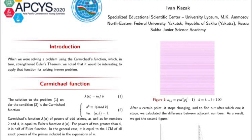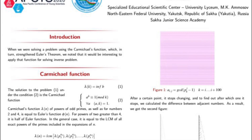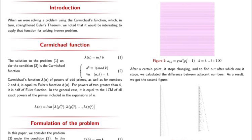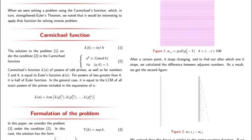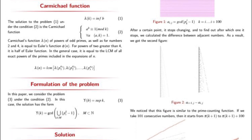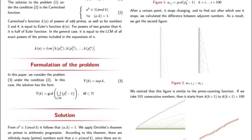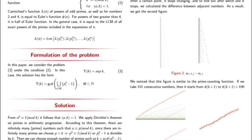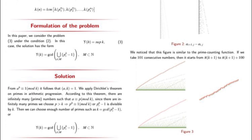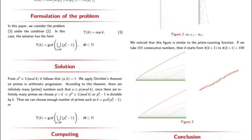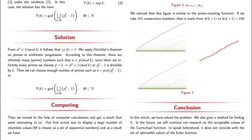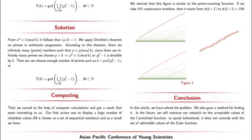In this study, we have solved the problem and also describe a method for finding it. In future, we will continue our research on the acceptable values of the Carmichael Function. To speak beforehand, it does not coincide with the set of admissible values of Euler's phi function. To be continued.